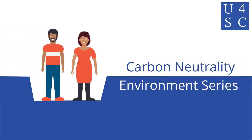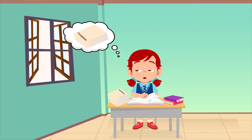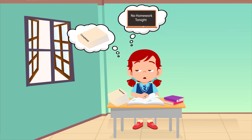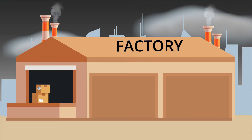Academy for Social Change presents carbon neutrality. Anna is in a class where the teacher assigns homework every day but doesn't check it until the end of the month. Unfortunately, it is halfway through the month and Anna hasn't done any of the homework. She has three options: she can start doing all her homework and do her best to catch up, she can hope that her teacher stops assigning homework every night, or she can continue not doing her homework and get in trouble later. Carbon neutrality works similarly.